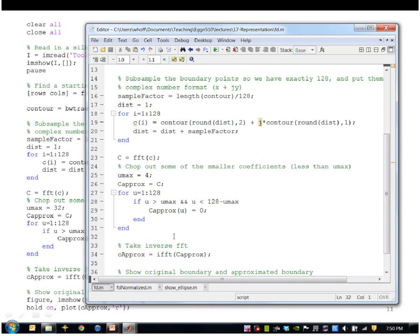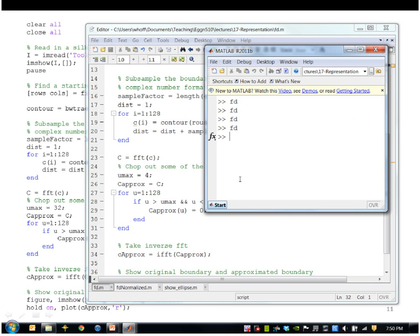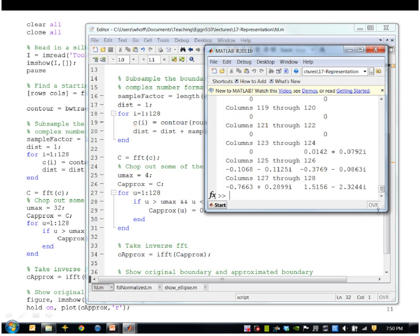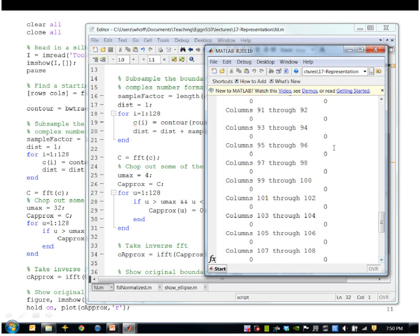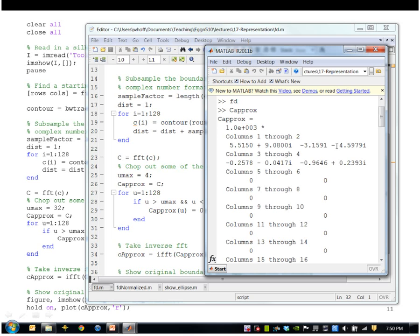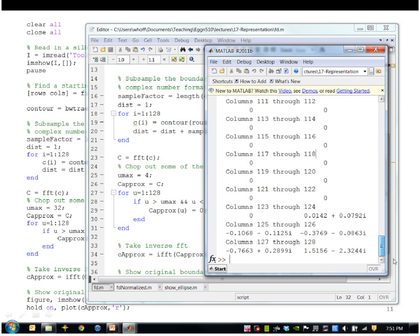Let me display the number of coefficients in C approx here. C approx is the Fourier descriptors that I've retained, and there's really only four nonzero values here and five nonzero values here. So really only nine complex numbers to represent that entire boundary.